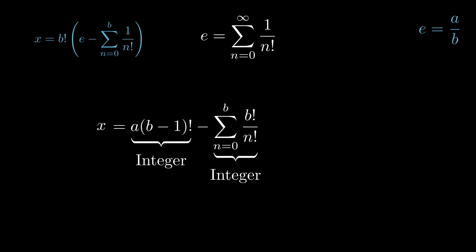That's because b is going to be greater than or equal to n for all n in this sum. What's the consequence of this? x is an integer minus an integer, or x is an integer.